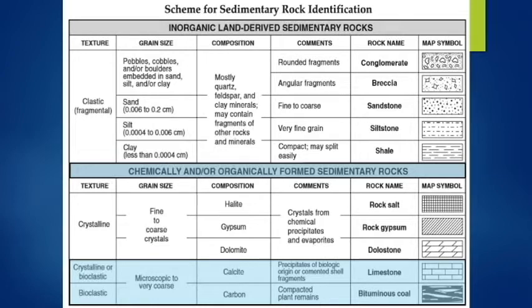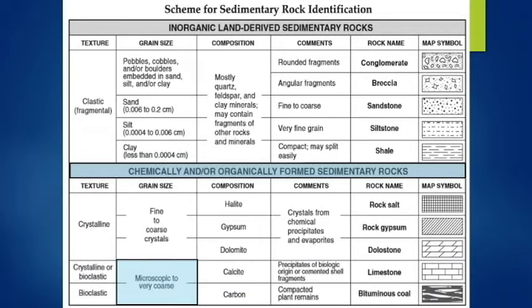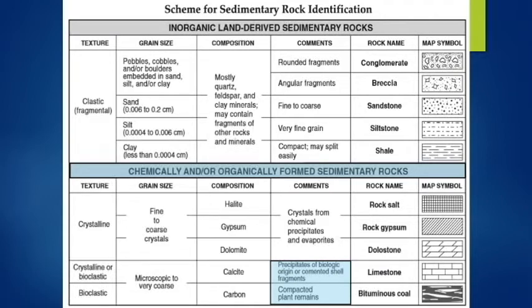Looking at the reference table for bioclastic rocks: the texture is bioclastic. The grain size can be anything from microscopic — as I showed you, those microscopic fossils — or it could be very coarse, like those big brachiopod shells. The composition for limestone is calcite — you can check that on page seven of the reference table. For coal, it's all carbon. For limestone, the comment is that it precipitates or falls from the ocean as organisms die. A biologic origin, cemented shell fragments — that's what limestone essentially is. For coal, it's compacted plant remains.